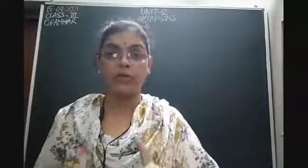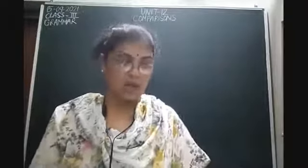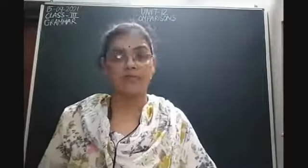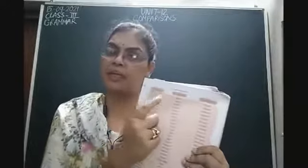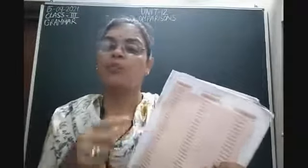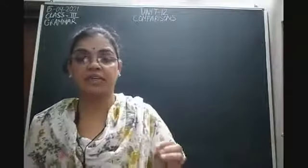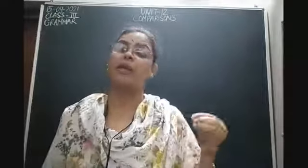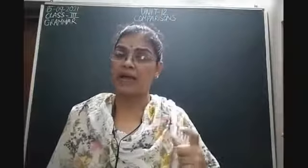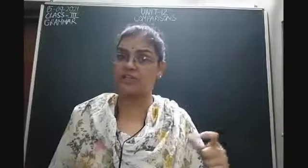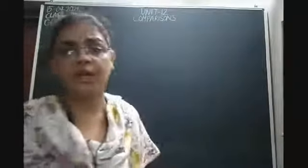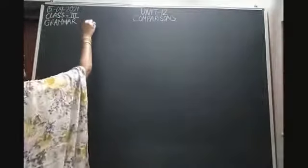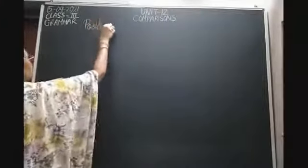Now I'm going to continue with the examples given on page number 47. We had done the first five adjectives — positive degree, comparative degree, and superlative degree. In those first five adjectives we formed the comparative degree by adding ER and the superlative degree by adding EST at the end of the positive degree. Let's continue with the table given on page number 47.